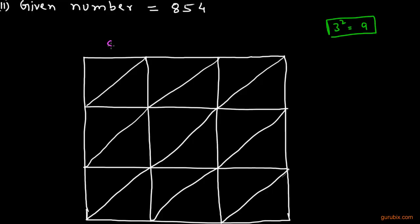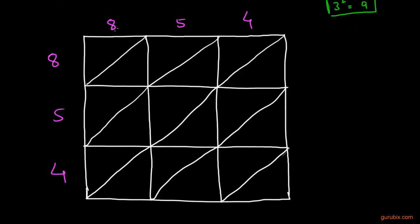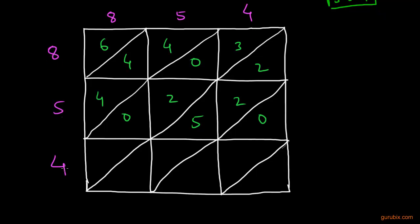We write the digits of 854 over each column and row of the square. Now we multiply: 8 times 8 is 64, 8 times 5 is 40, and 8 times 4 is 32. Then we multiply 5 times 8 to get 40, 5 times 5 to get 25, and 5 times 4 to get 20.